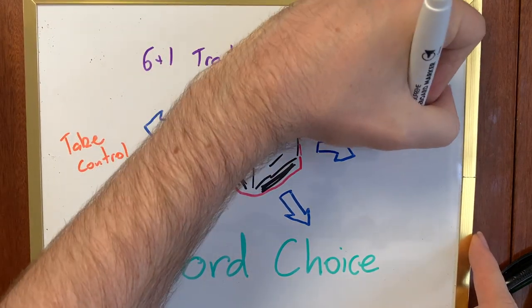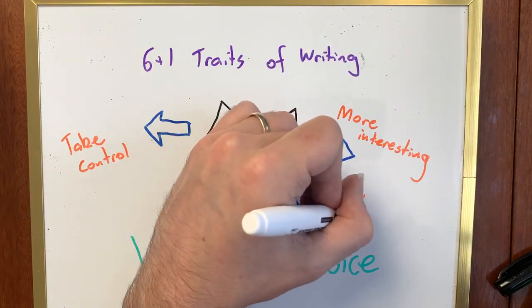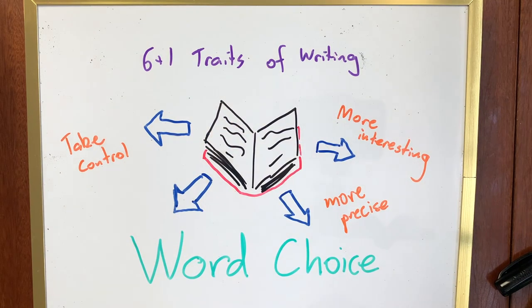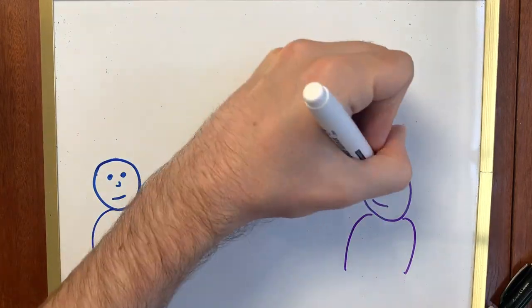As a writer, if you can take control of your word choice, not only will you be able to make your writing more interesting, but you will make it more precise. Let's see an example of this in action.